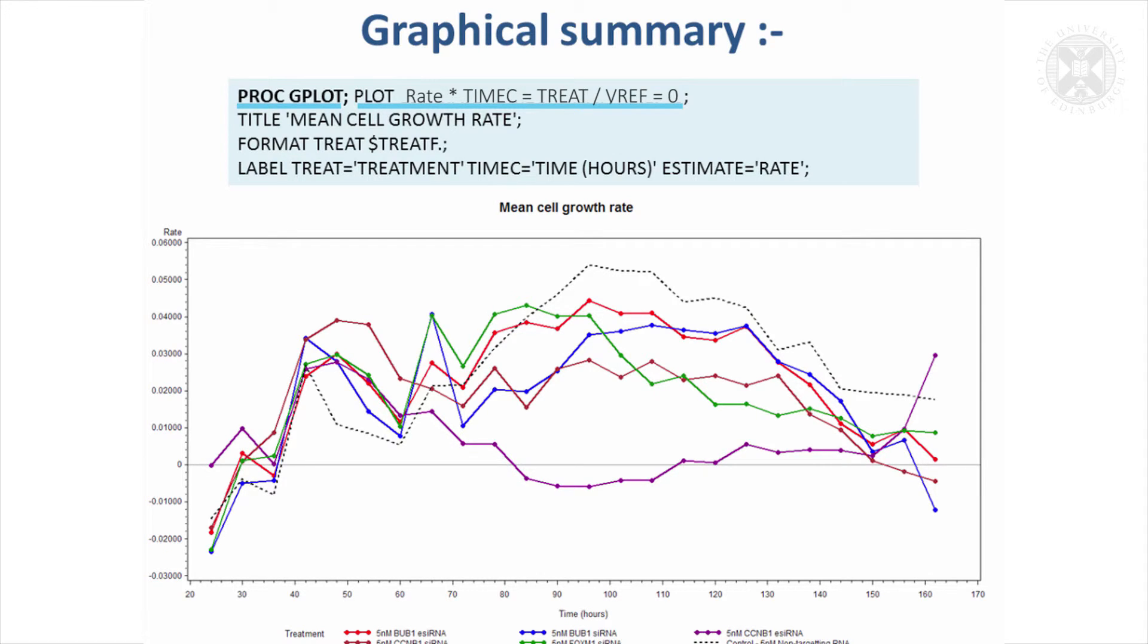So that's what you want to do, a G plot. Then you have a plot statement to say, to define the plot. In this plot we're saying I want to plot the rate by the time effect. And we want, this equals treat says I want to plot a separate kind of line for each treatment.